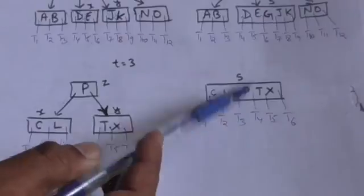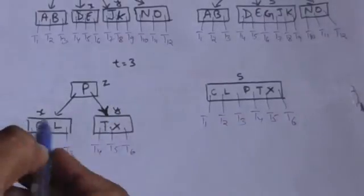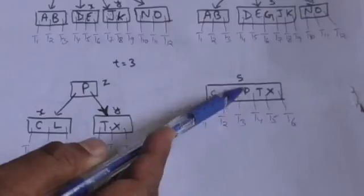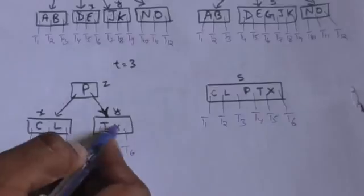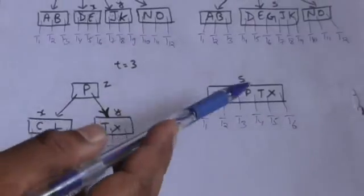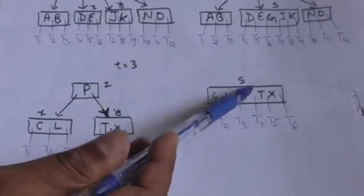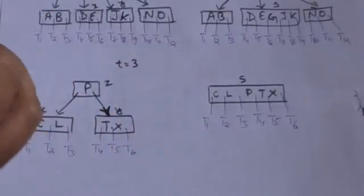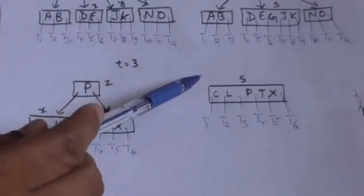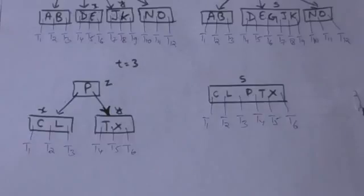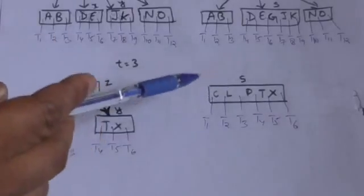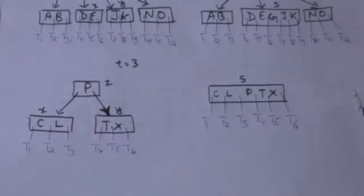All keys and children of node x will be at the left of key P in node s, and all keys and children of node y will be at the right of key P in node s. Node s will be the new root of the B-tree, and the height of the B-tree will be decreased by 1.